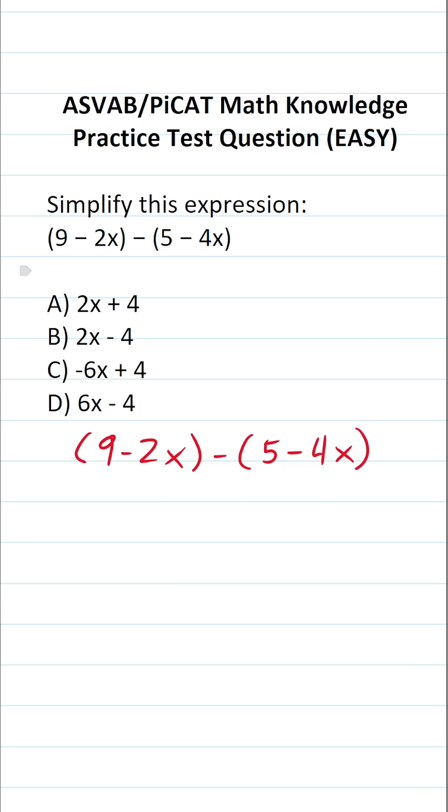In this case we're being asked to subtract two polynomials. For this first polynomial, that is 9 minus 2x, we can go ahead and get rid of the parentheses. They're not affecting anything at this point.